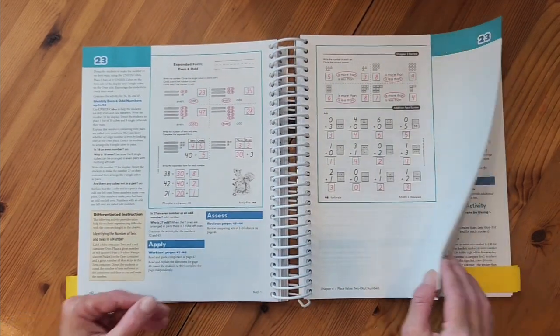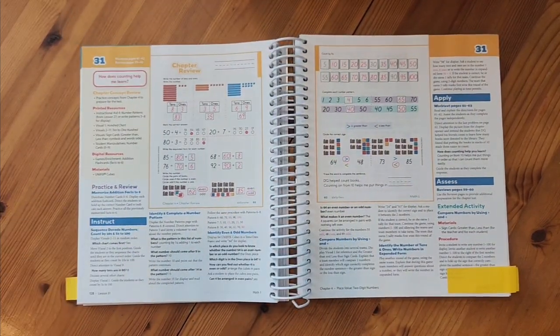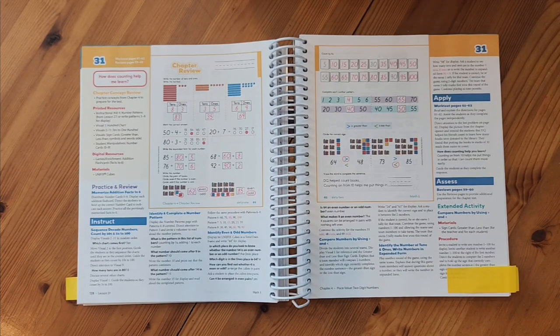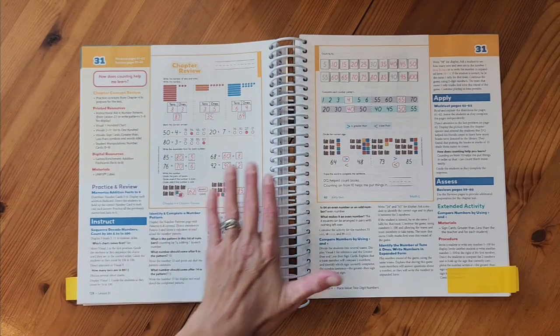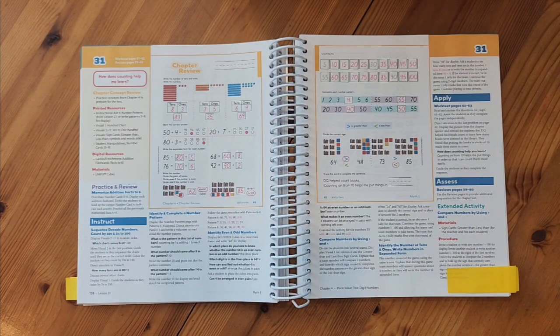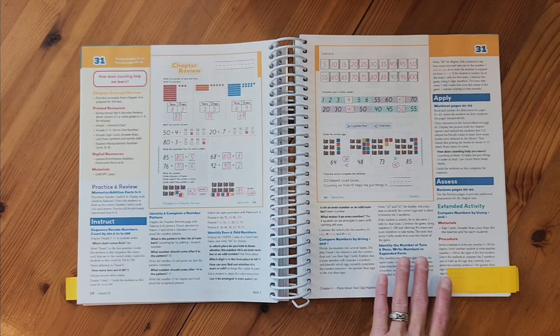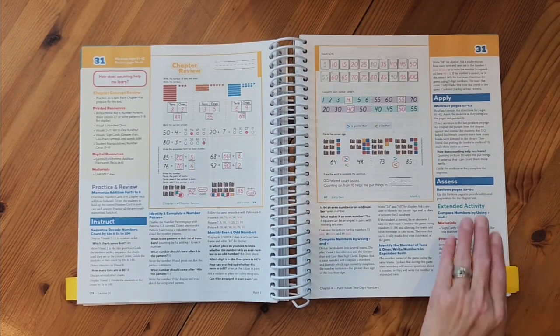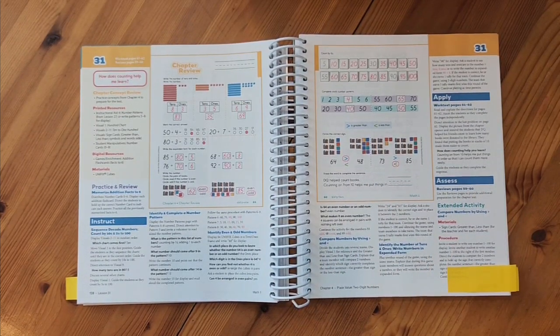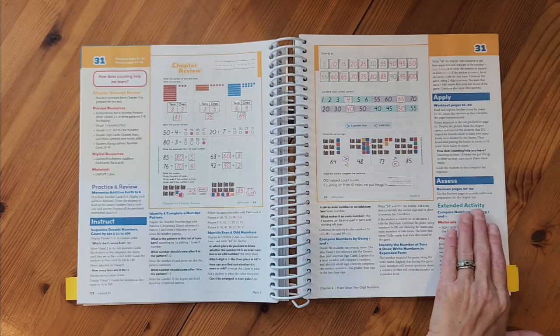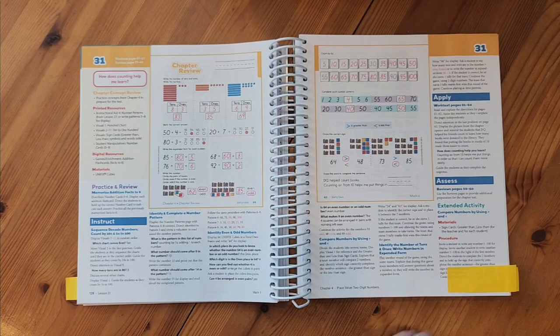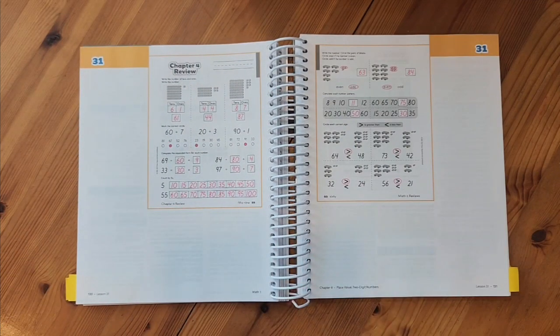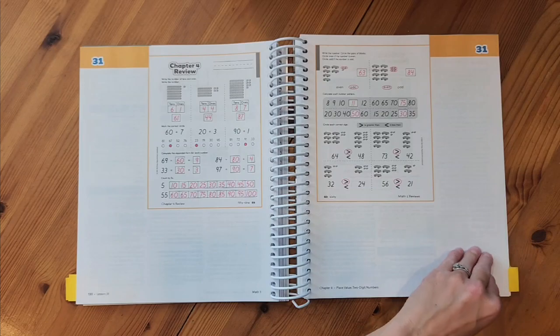So I'm going to jump ahead now to the chapter review. At the end of each chapter there's a chapter review and on this chapter review we're going to review all the different concepts that we've talked about within this chapter. I've got some instructing sections to help review and then I've got an apply where they're going to do their pages and I've got an assess if we need that extra practice in the review pages. I've even got an extended activity today. I also have those extra review pages in the review book and there's the answers for those.